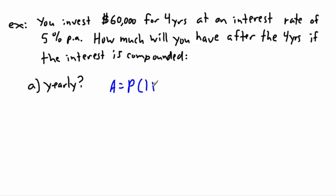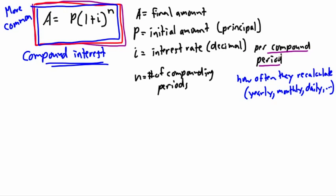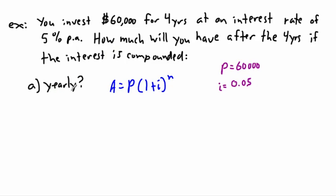Let's figure out the variables. P equals $60,000 — that's your principal and never changes. For yearly compounding, i is the interest rate as a decimal, 0.05, per compounding period. Since we're compounding once per year, that's 0.05 over 1. And n is the number of compounding periods — four years compounded once a year — so n equals 4.